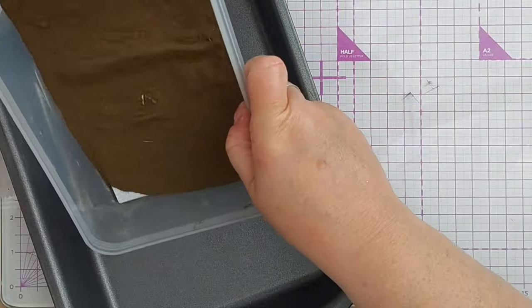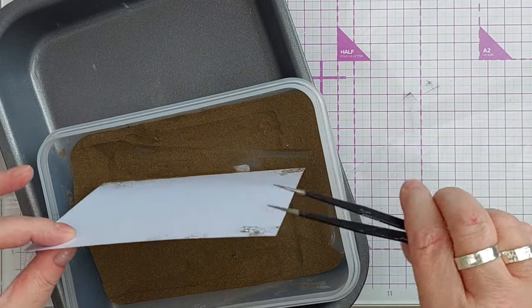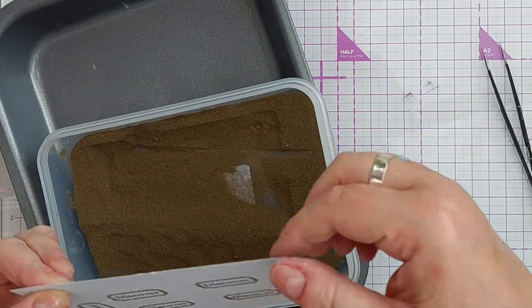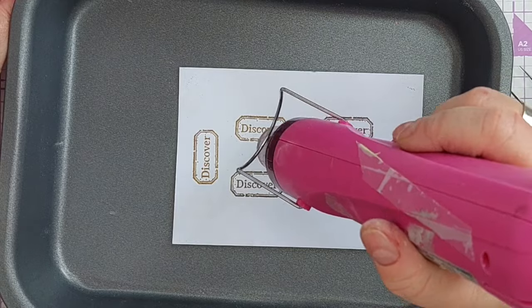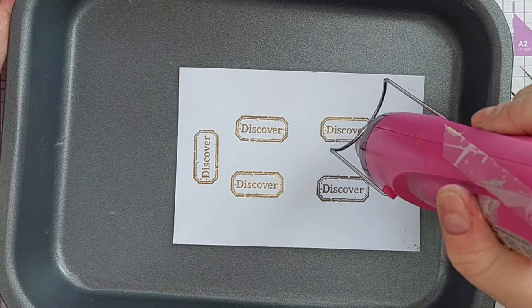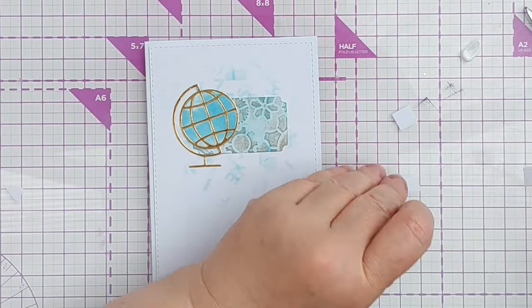I decided to do this in gold to match the gold of the globe, and I heat embossed that. That was my usual process of dusting my paper with corn flour, stamping in embossing ink, dipping it into my gold embossing powder, and then heating it with my heat tool.